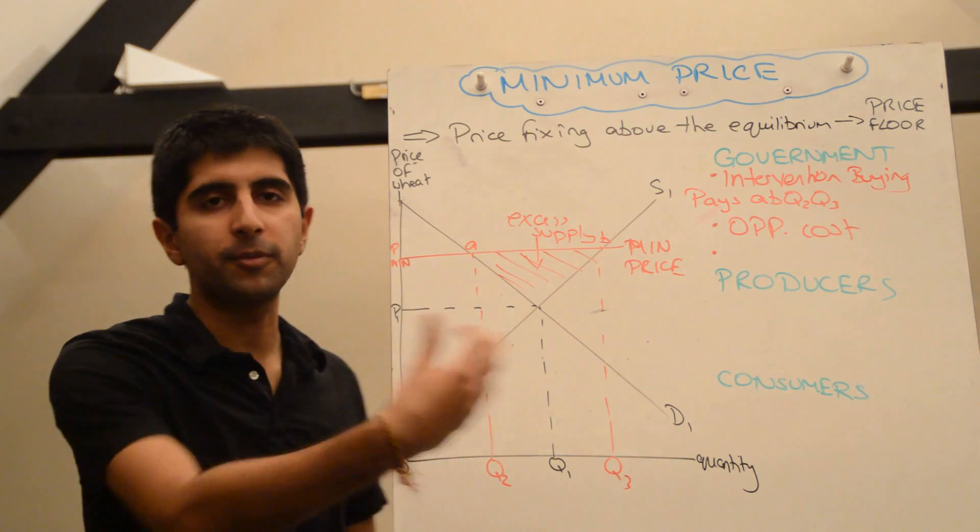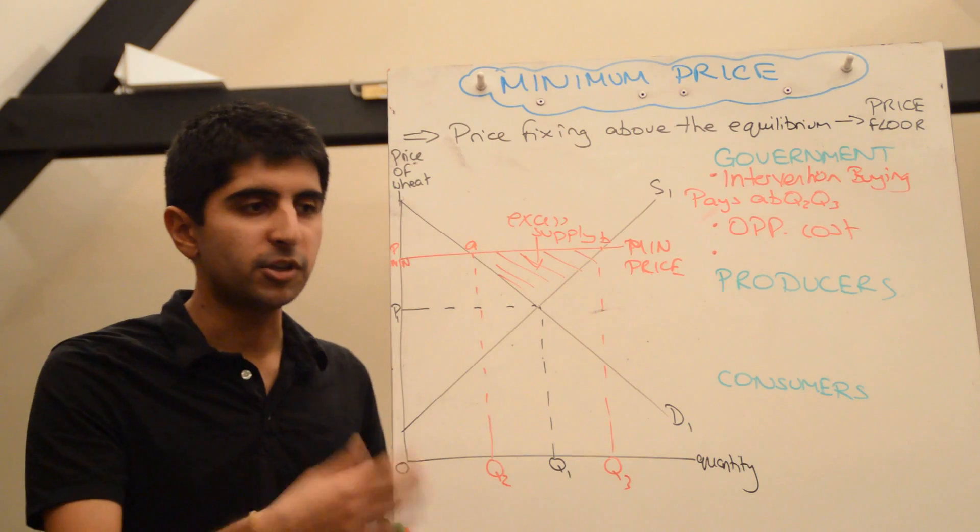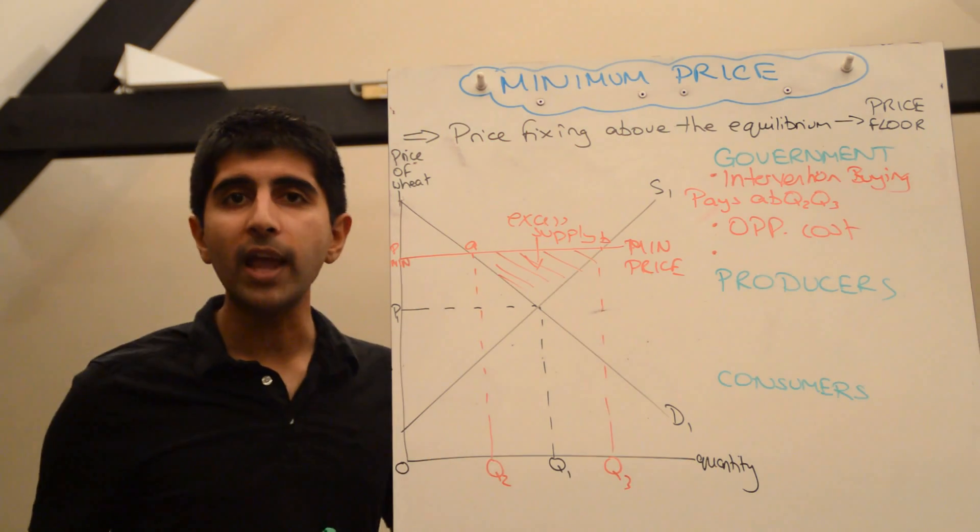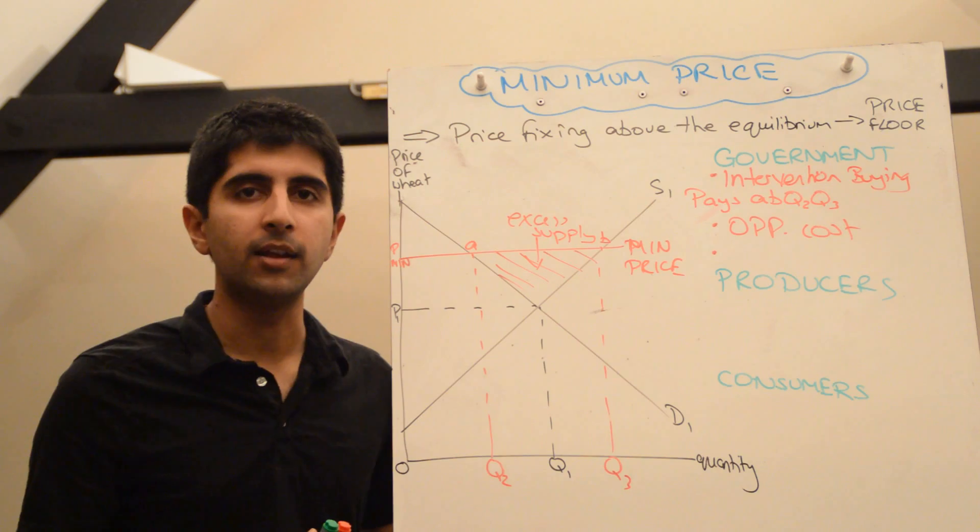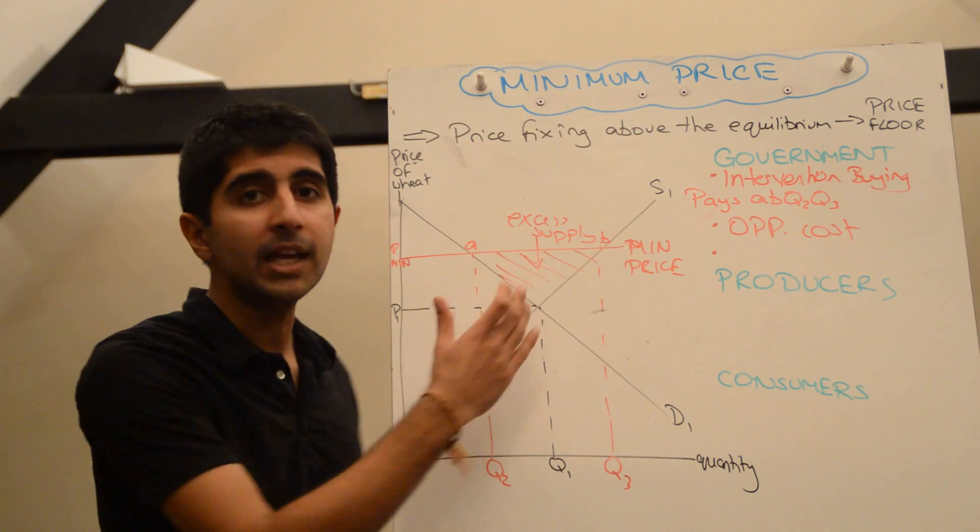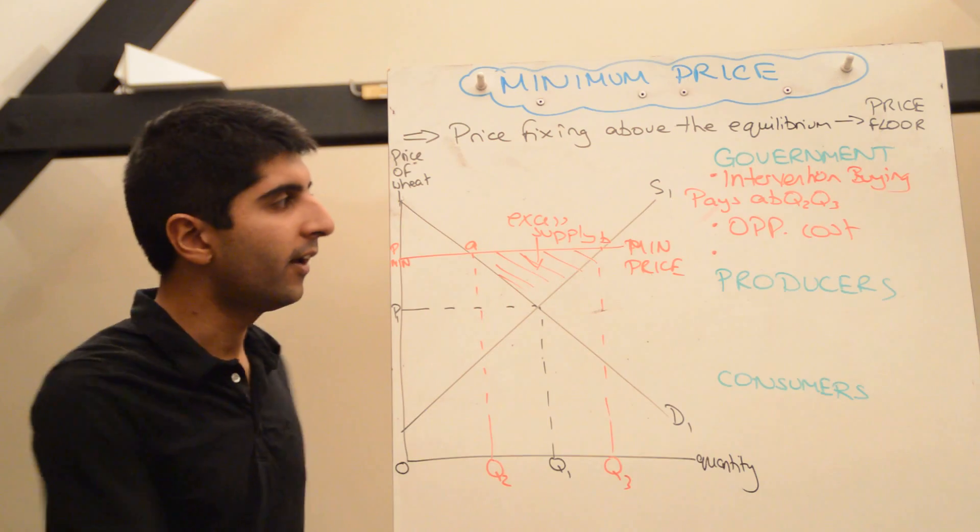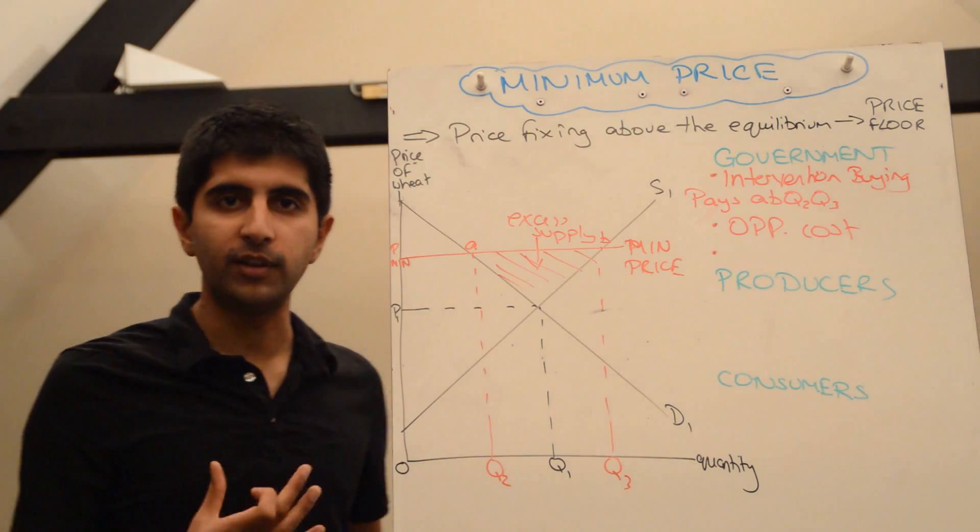Maybe that money should have been spent on education and healthcare. Maybe it should have been spent on building infrastructure. Maybe that money has been taken away from other key areas of the economy. Maybe by spending money here, the government has to finance it by raising taxes in the future. Whatever, there is going to be an opportunity cost involved here for the government.